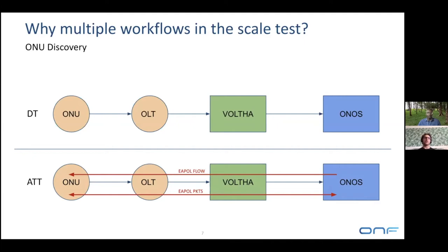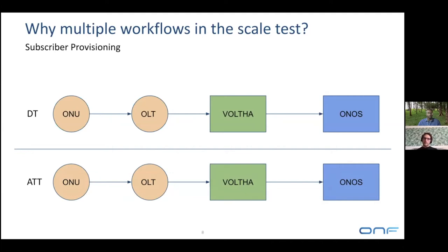As soon as the ONU has these flows, it will be able to start sending out EAPOL packets that travel through the entire stack from ONOS to a RADIUS server and back — an exchange of seven or eight packets depending on the state machine implemented for each subscriber. This gives you a first view of why it is so important that the scale test addresses all of these different configurations.